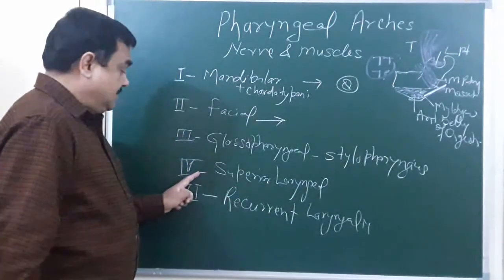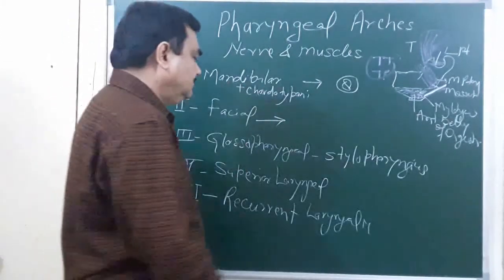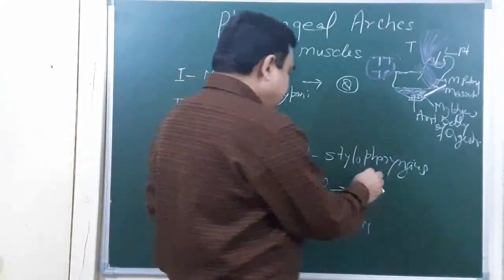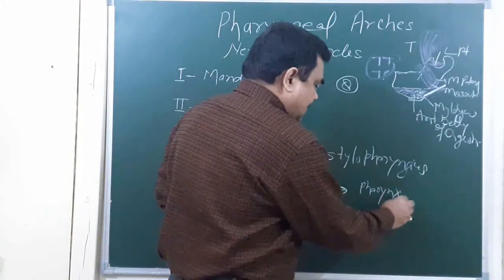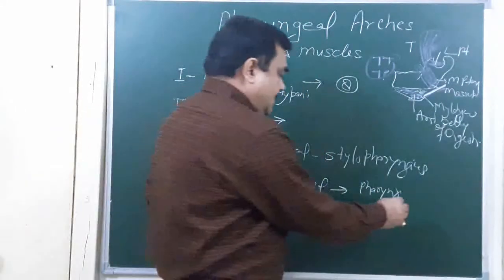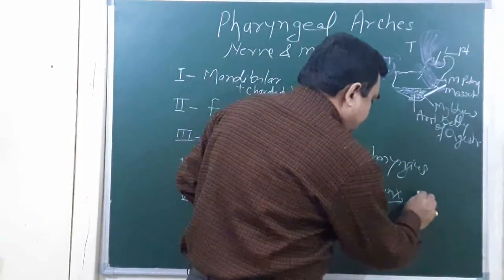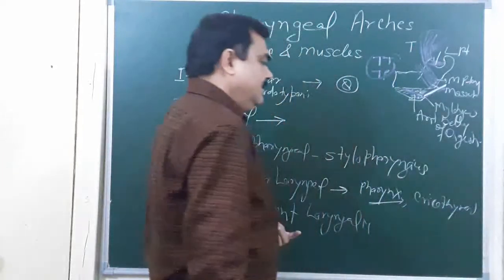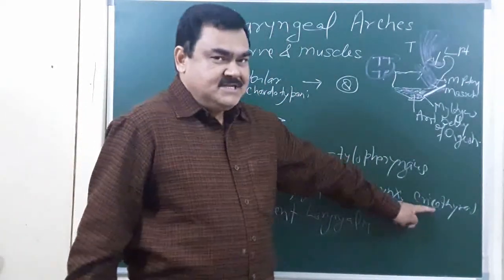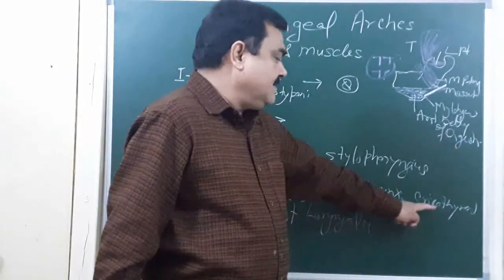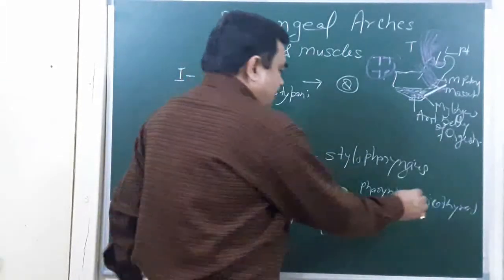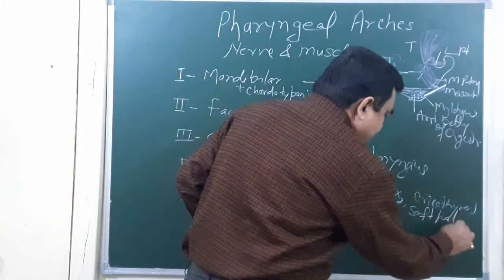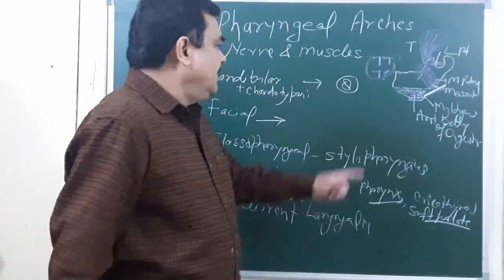The fourth arch nerve is the superior laryngeal nerve. It gives supply to the muscles of the pharyngeal constrictors and to the cricothyroid, which is an intrinsic muscle of the larynx. It also supplies the muscles of the soft palate, except the tensor veli palatini.